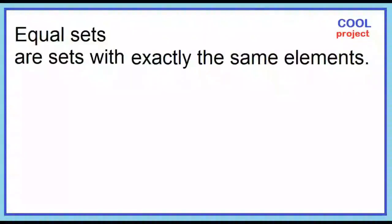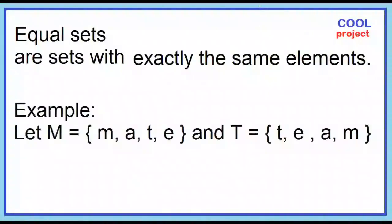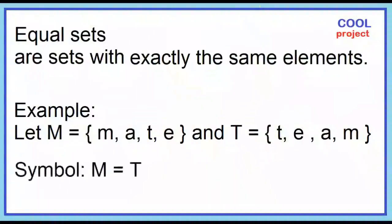Equal sets are sets with exactly the same elements. Example: Let M be the set of letters in the word 'mate' and T be the set of letters in the word 'team.' Set M and set T have exactly the same elements. Set M equals set T.